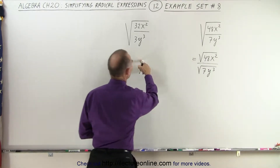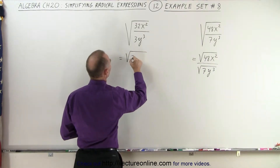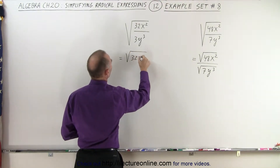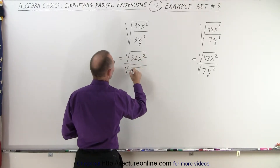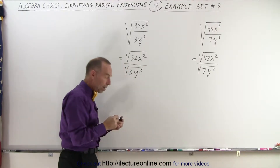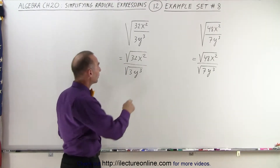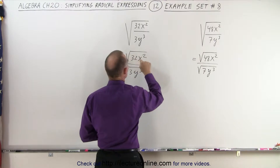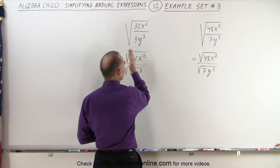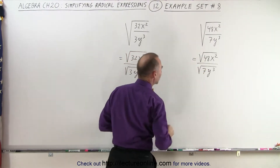Over here we do the same thing. We write this as the square root of 32x squared divided by the square root of 3y cubed. Now when we take a look at it, notice that in both expressions the square root of x squared simply becomes x. But how do we deal with 32 and 48?